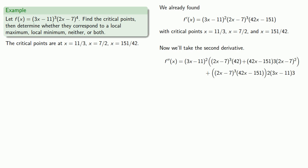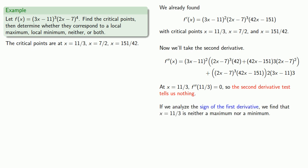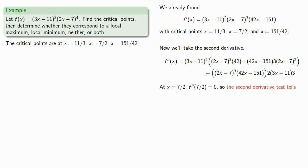We think the second derivative might actually be useful, so let's evaluate it at our three critical points. At x equals 11/3, the second derivative is zero, so the second derivative test tells us absolutely nothing — we have to go to the first derivative test, which tells us x equals 11/3 is neither a maximum nor a minimum. At x equals 7/2, the second derivative is also zero, so once again the second derivative test tells us absolutely nothing.